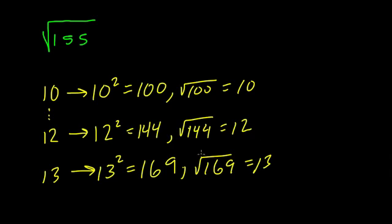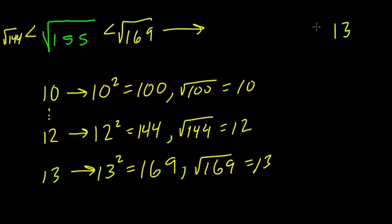But the square root of 155 is less than that. So it's less than the square root of 169 and greater than the square root of 144. Since the square root of 169 is 13 and the square root of 144 is 12, the square root of 155 is less than 13 and greater than 12.